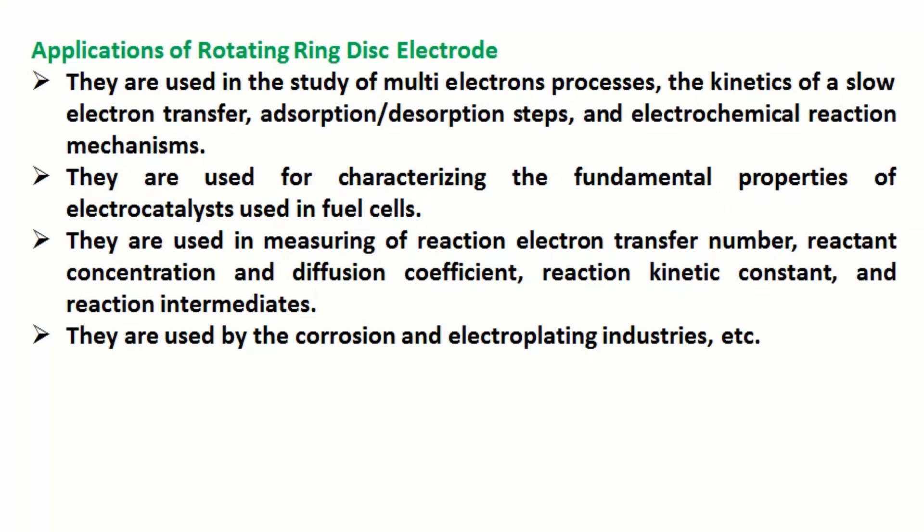Applications of rotating ring disc electrode: They are used in the study of multi-electron processes, the kinetics of slow electron transfer, adsorption or desorption steps, and electrochemical reaction mechanisms. They are used for characterizing the fundamental properties of electrocatalysts used in fuel cells.